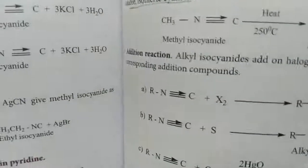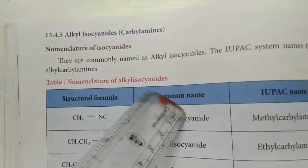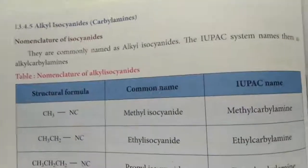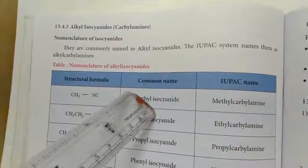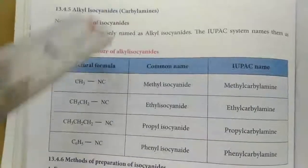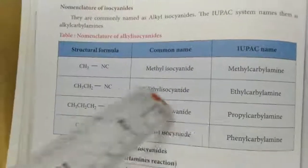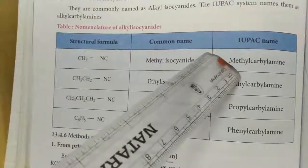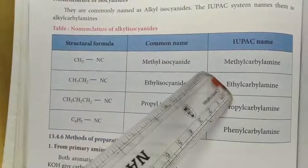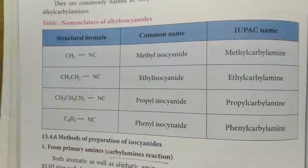Alkyl isocyanides — preparation and IUPAC nomenclature. Common names: methyl isocyanide (CH3NC), ethyl isocyanide (CH3CH2NC), propyl isocyanide, phenyl isocyanide. IUPAC names: methane carbylamine, methyl carbylamine, ethyl carbylamine, propyl carbylamine, phenyl carbylamine — very simple.